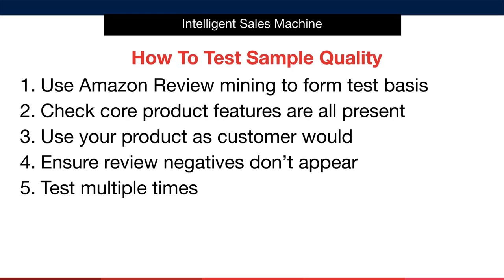The final thing you might be wondering about is whether or not we have a specific way that we test our items — and the answer is yes, we certainly do. Here is our method for you to swipe and deploy in your own business. The first thing we're going to do is to look back at our Amazon review mining exercise from earlier to locate the specific things that were wrong with our competitors' products. We'll use these complaints as a basis for our test. When we receive the item, the first thing to do is to test the product's core operation — in other words, does the item do what it's supposed to do reliably and consistently? We'll get a feel for this by simply using the product as a consumer would. Once we've confirmed that the item works as it's supposed to, we'll make sure that the negative complaints our competitors' items received aren't present in our sample.